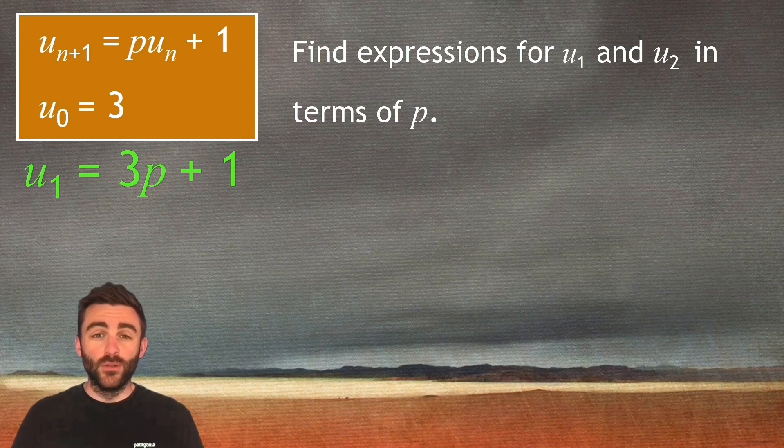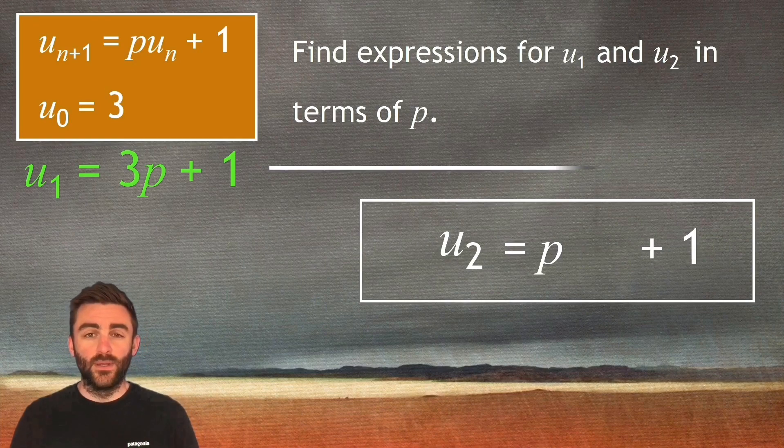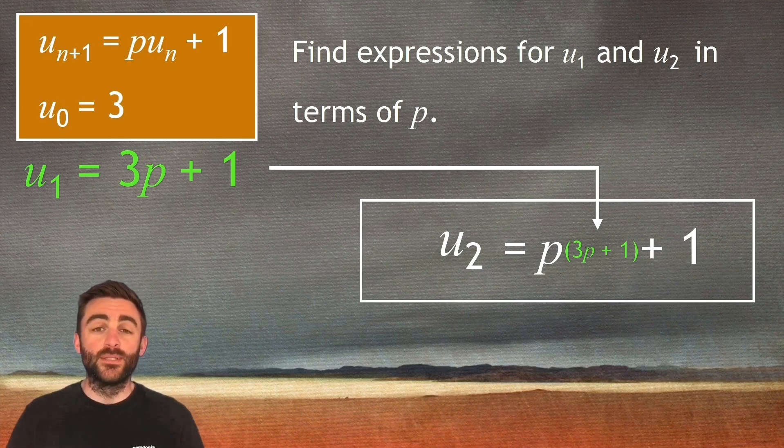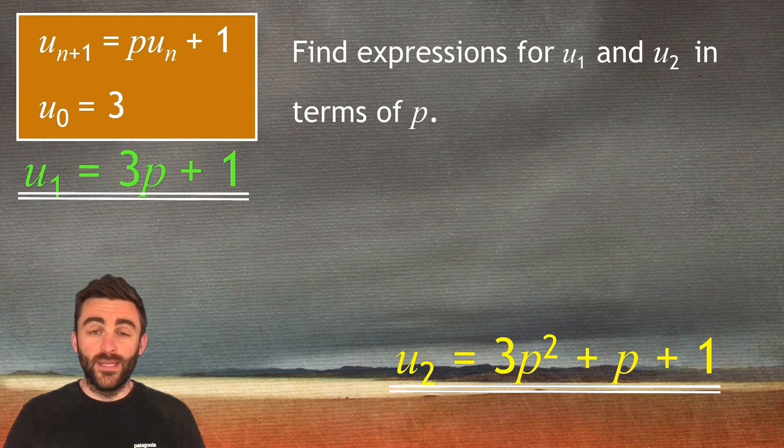We now have to find u_2. Well let's copy down that recurrence relation again. u_2 will be equal to p times u_1 add one. So u_2 is equal to p times three p add one add one. And multiplying that bracket we will see that u_2 is equal to three p squared add p add one. So we found expressions for u_1 and u_2 in terms of p as required.